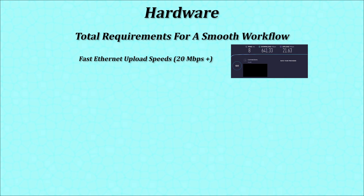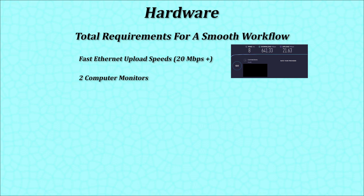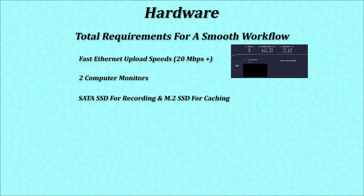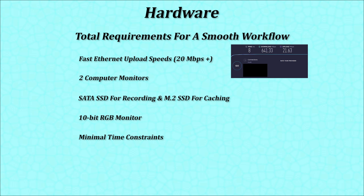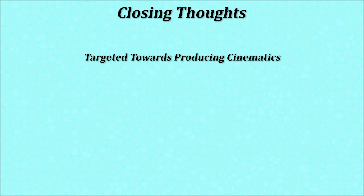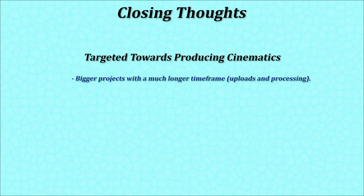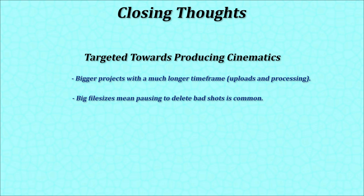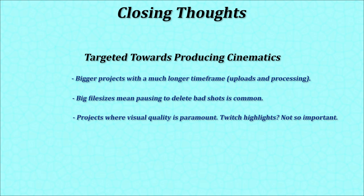Fast Ethernet upload speeds help reduce the time it takes to upload your final video to YouTube. Two computer monitors help in the recording and editing process. A dedicated SATA SSD for recording and an M.2 SSD for caching in your NLE. A 10-bit monitor for accurate color correction when editing. This workflow is targeted more towards the cinematic side of content creation. For someone who doesn't upload a new video every week and records in a very controlled environment, the massive file size is manageable. However, if you're trying to record content for a montage, for example, this method of recording may not be feasible and is probably a little unnecessary.